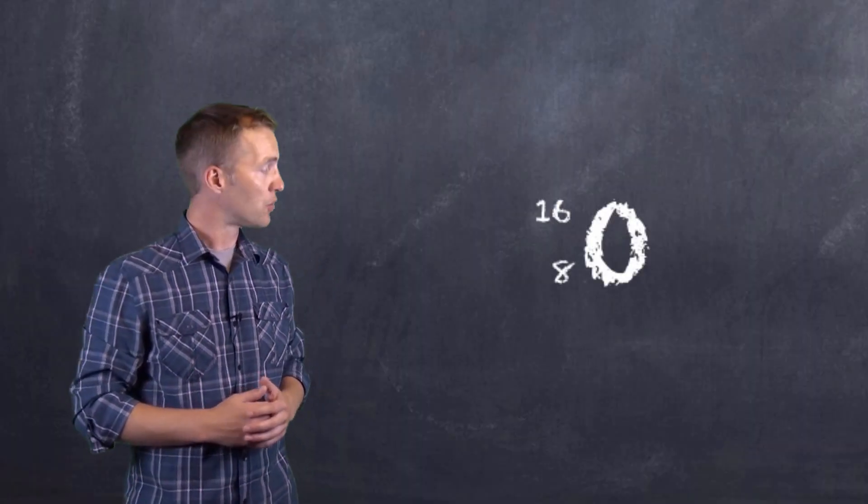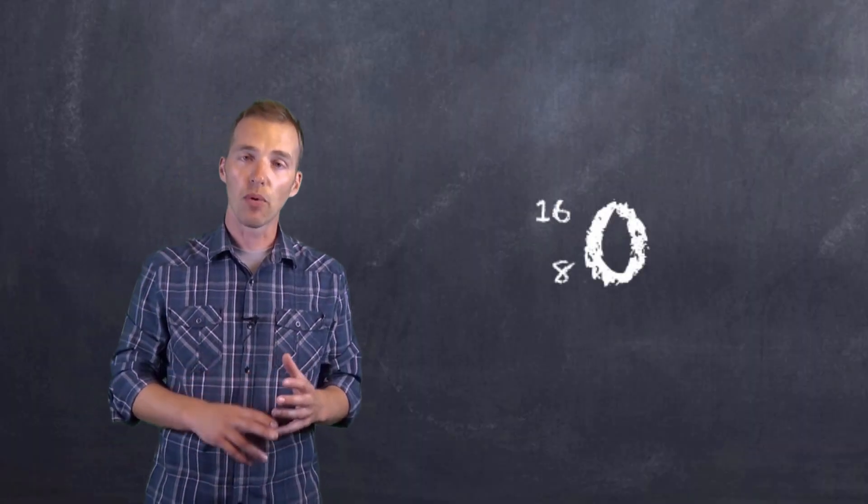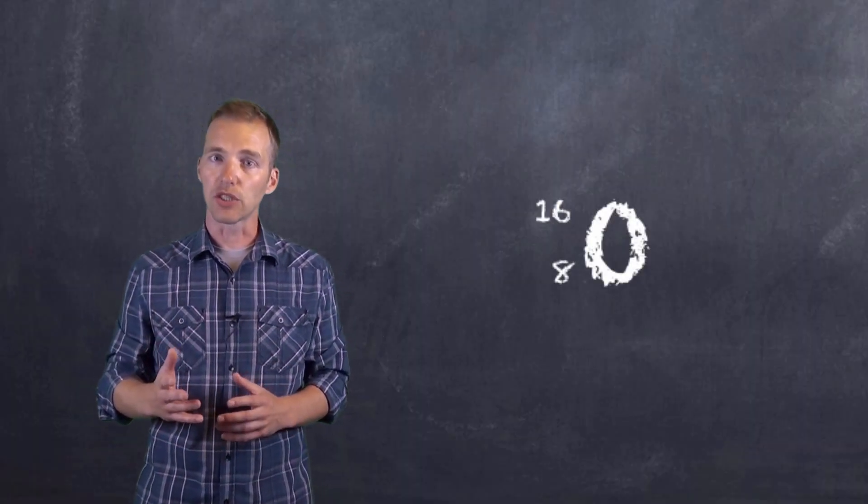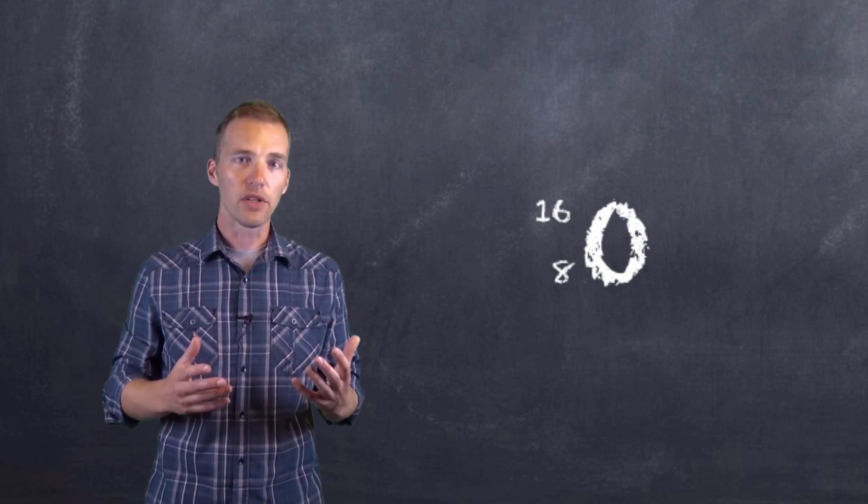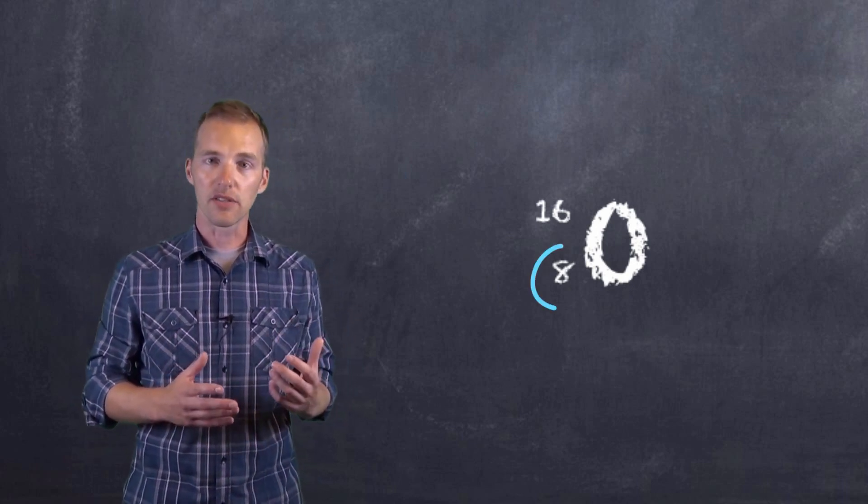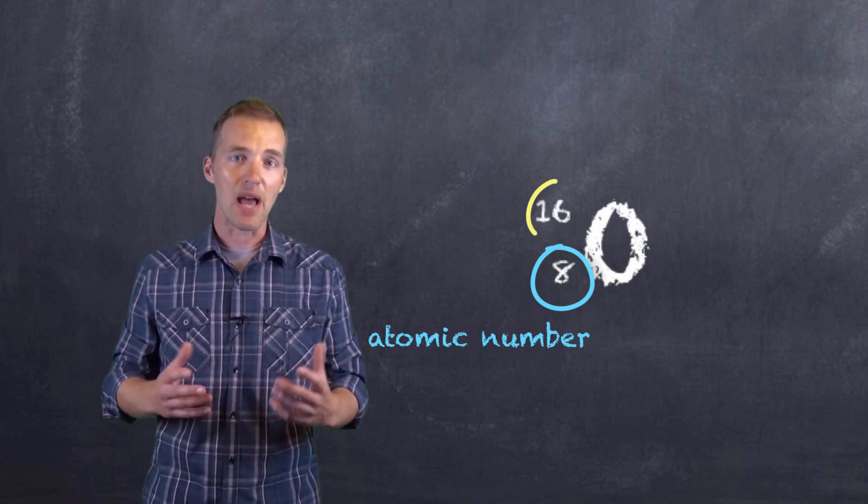So we're going to use oxygen to help us work through the construction of a Bohr-Rutherford diagram and a Lewis structure for an oxygen atom. As we can see here, the standard nuclear notation for oxygen tells us that we have an atomic number of eight and a mass number of sixteen.